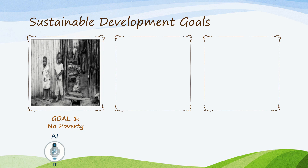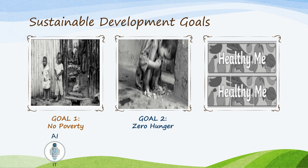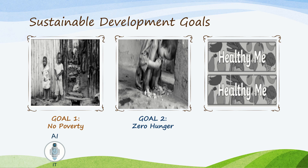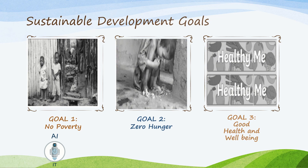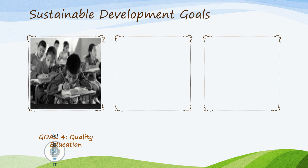The first goal is No Poverty — to end poverty in all its forms everywhere. The second goal is Zero Hunger — to end hunger, achieve food security, and improve nutrition, and promote sustainable agriculture. The third goal is Good Health and Well-being — to ensure healthy lives and promote well-being for all at all ages.